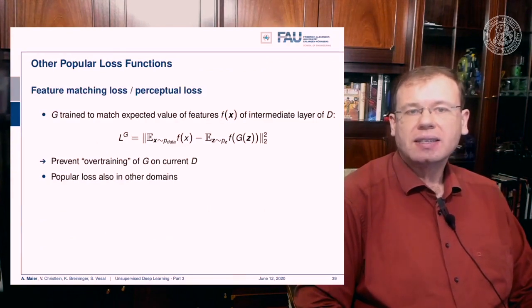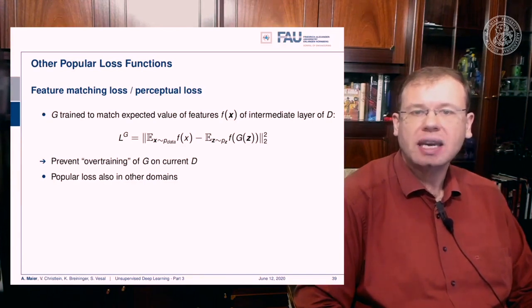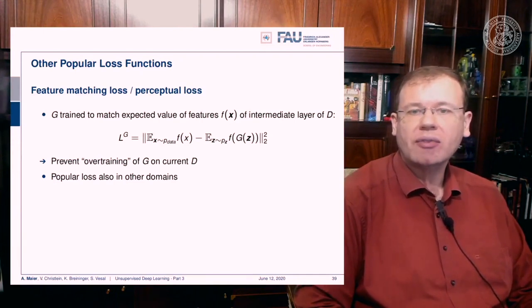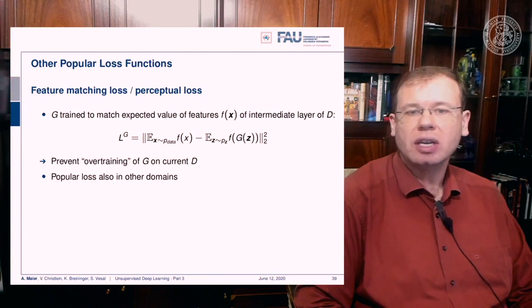Popular extensions include the feature matching loss or perceptual loss. Here, G is trained to match the expected value of features f(x) from some intermediate layer of D — for example, a layer 3 or layer 5 representation of another network — and you want the expected values of these representations to be the same for real inputs as well as for generated noise images. This prevents overtraining of the generator on the current discriminator, and this loss is also popular in many other domains.